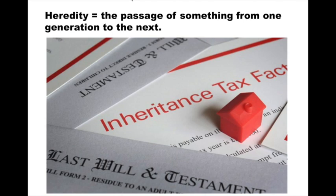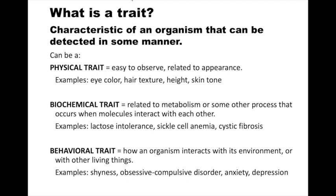This is also applicable to DNA, or traits. So what is a trait? It's a characteristic of an organism that could be detected in some manner. Physical traits are easy to observe — they're related to appearance. Eye color could be a physical trait, hair texture, height, skin tone. Just some examples for humans that are physical traits — things that we see are all very much physical traits.